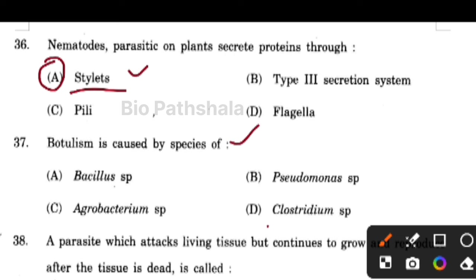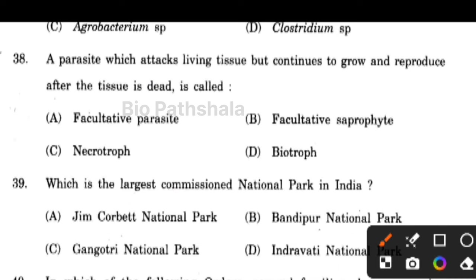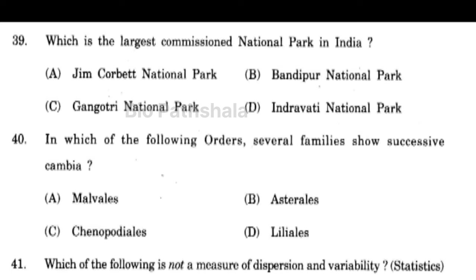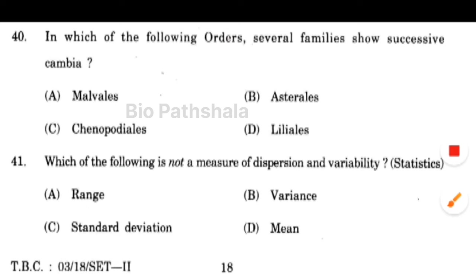Next question: a parasite which attacks living tissue but continues to grow and reproduce after the tissue is dead is known as a facultative parasite. Which is the largest commissioned national park in India? Remember the word 'commissioned' — it is Gangotri National Park. The largest overall is Jim Corbett, but the largest commissioned is Gangotri.